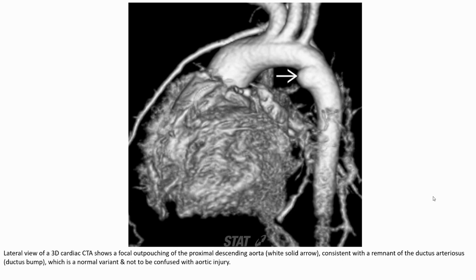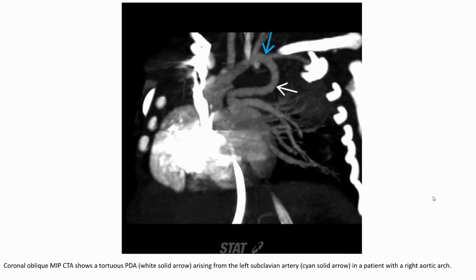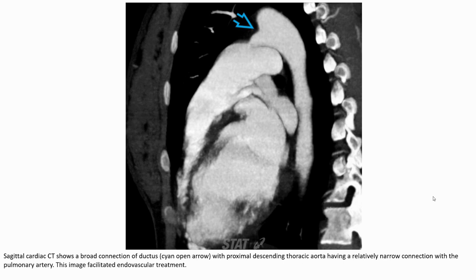This represents the resolving of the PDA. The coronal oblique MIP CT shows a tortuous PDA. A sagittal CT shows a broad connection of the ductus with the proximal descending aorta, having a relatively narrow connection with the pulmonary artery. This image facilitates planning for endovascular treatment.